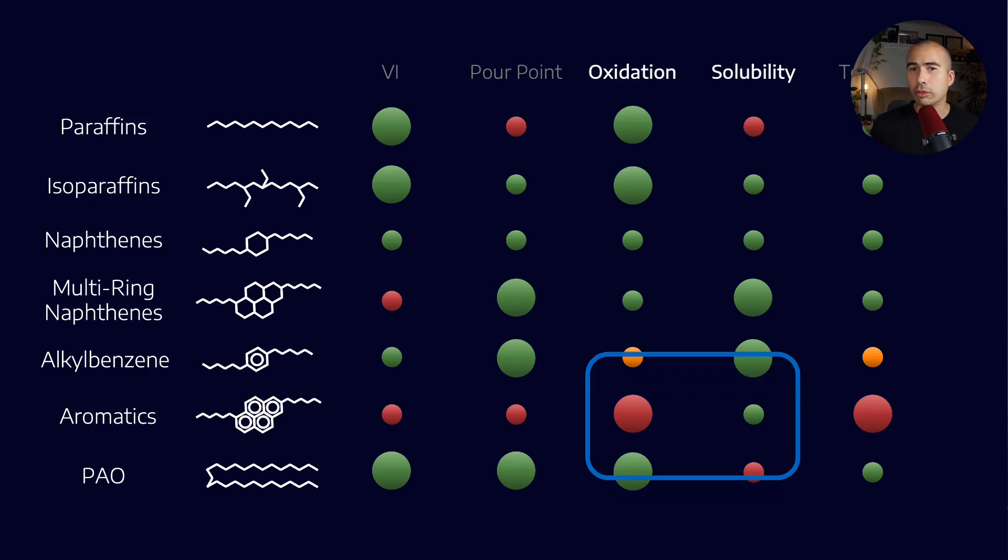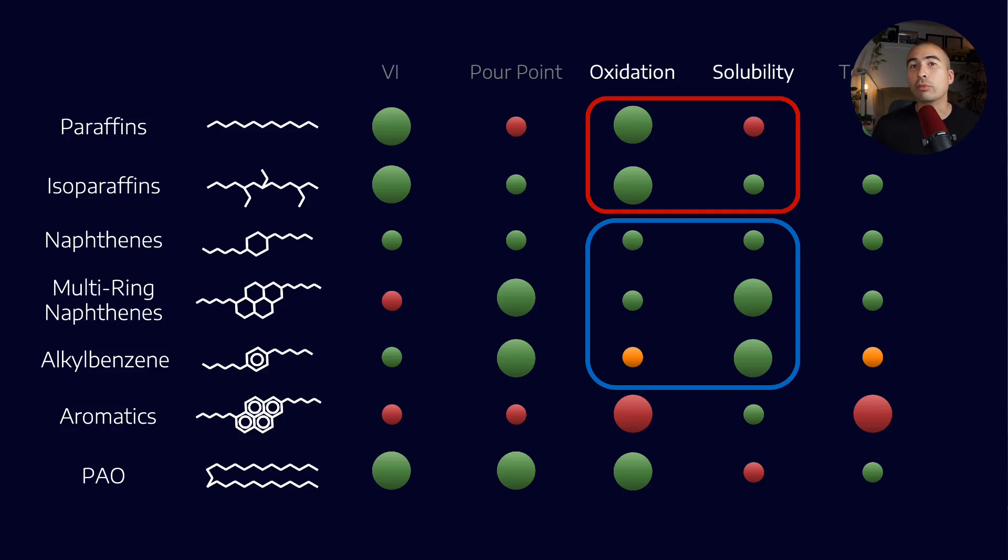Where it's more important to highlight is where we go into the naphthenes and alkylbenzenes, as well as the paraffins and isoparaffins. Because remember, as we are moving from Group 1 to Group 2 to Group 3, we are reducing the amount of molecules that are in the blue box, and we are increasing the proportion of molecules that are in the red box.